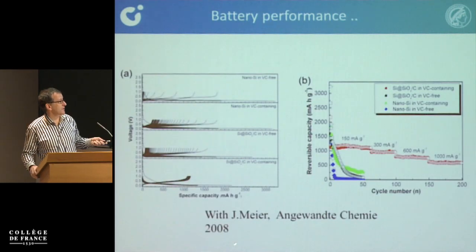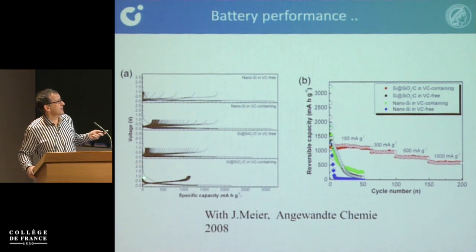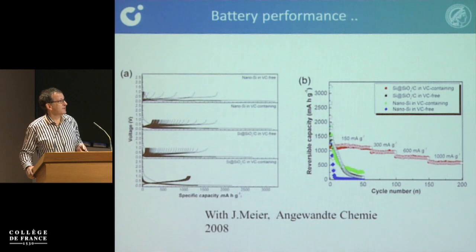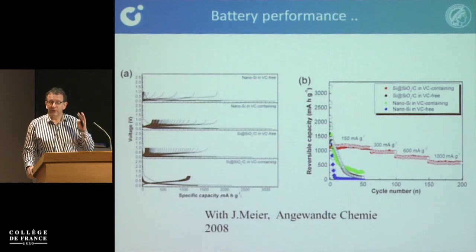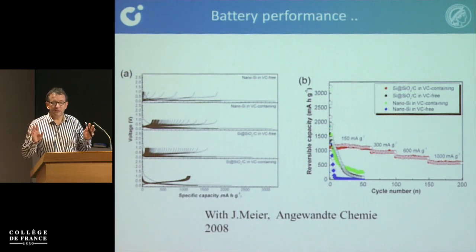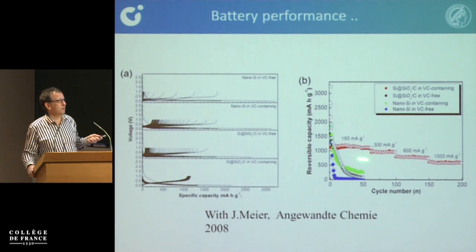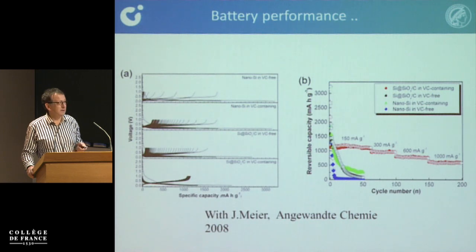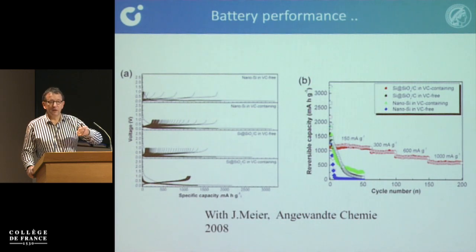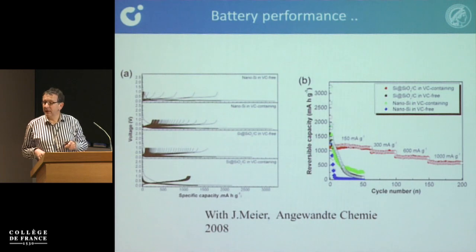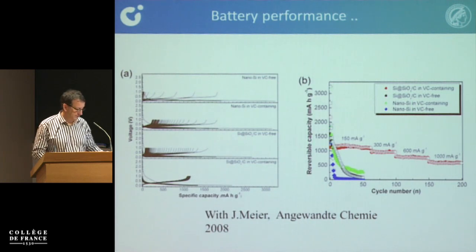This is work together with Joachim Maier. You have to seal the little bags with the right secondary component — many experiments — but in the very end you see a specific capacity stable for 1,000 cycles at 1,200 milliampere-hours per gram. That is three times the value of graphite. Such a simple process really results in a very good anode material for the lithium-ion battery, with excellent rate behavior brought in by the highly conductive carbon.